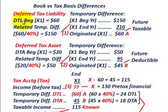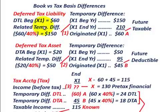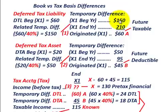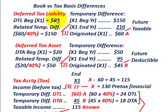For year X1, we have a deferred tax liability at the beginning of the period of $60,000 (all amounts in thousands). The related temporary difference is found by dividing the deferred tax liability by the tax rate: $60,000 ÷ 40% = $150,000. To verify, $150,000 × 40% = $60,000, confirming the relationship between temporary difference and deferred tax liability.